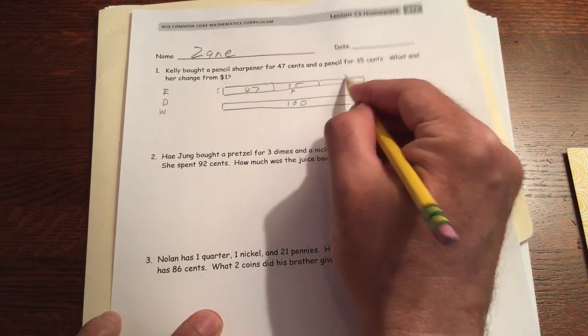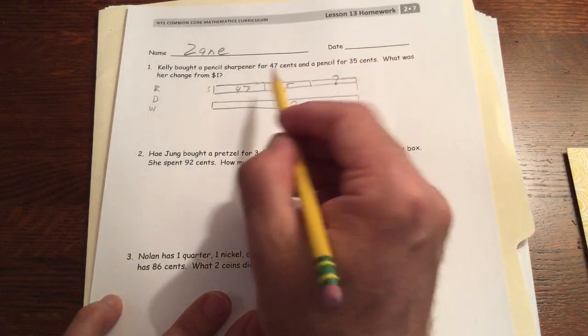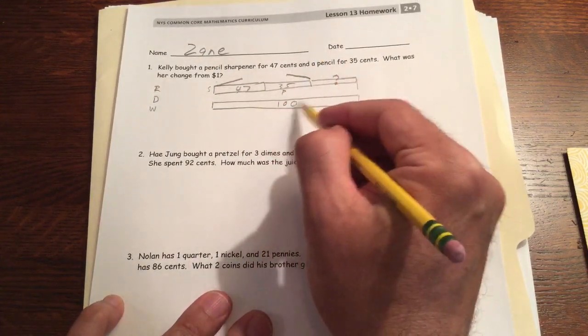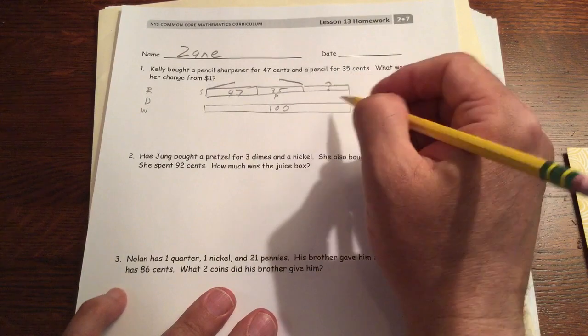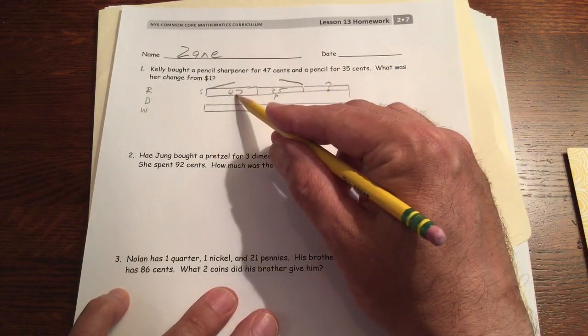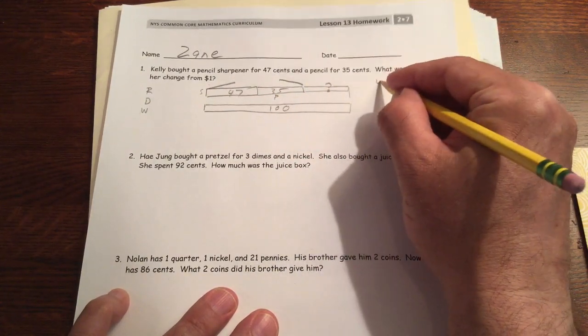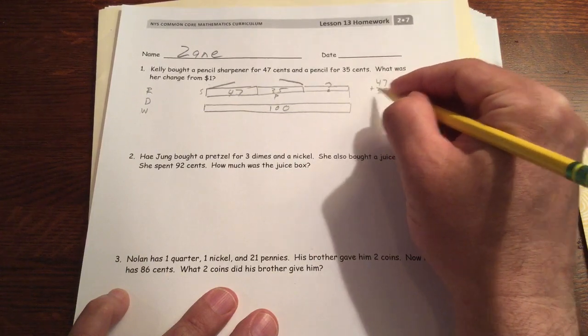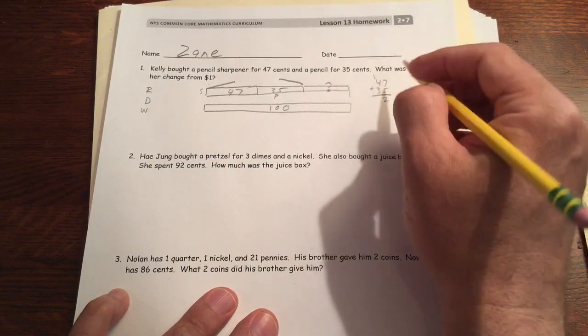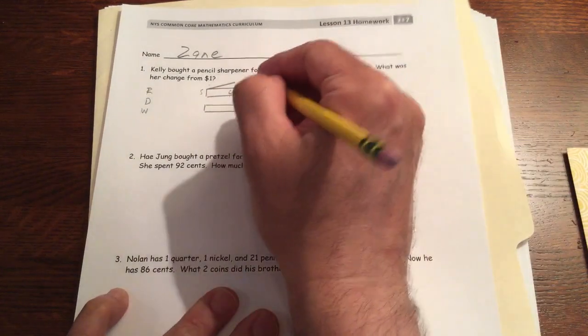There's our picture. So we're gonna add these two to figure out this much and then subtract it from the hundred to find out how much her change is gonna be, how much she's gonna get back from the cashier. So the 47 and the 35, you might be able to do that mentally or you can just add it up vertically. 7 and 5 is 12, that's a 10 and a 2, and there we have 3 and 4, 7, that's 8. This is 82 cents.